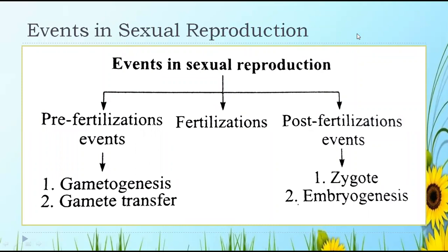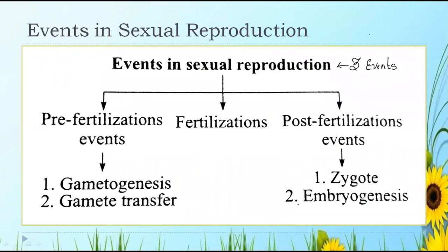Yesterday I was explaining how to put things in a flowchart. Now, in sexual reproduction, how many events are there? We have studied about seasonal breeders and continuous breeders. Now we will study about sexual reproduction and what the events are. There are three events in the sexual reproduction process.